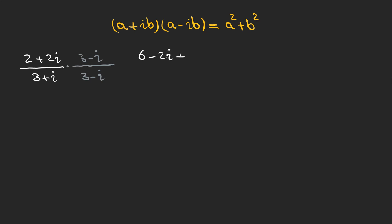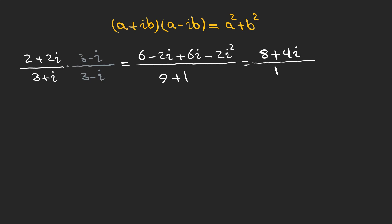So this is our numerator with a real number in the denominator, and we are left with four over five plus two over five i. The real part is four over five and the imaginary part is two over five.